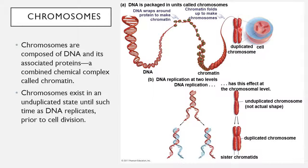Chromosomes are composed of DNA and the proteins associated with that DNA, coiled up into a substance called chromatin. Chromatin is just a bundle of DNA and proteins, and that DNA-protein bundle gets folded up into the chromosome shape. Chromosomes exist in an unduplicated state until the DNA replicates prior to cell division — so there's one copy of each chromosome in your cell until the DNA is ready to replicate, at which point you will have an additional copy of all chromosomes.